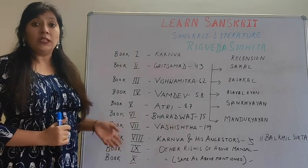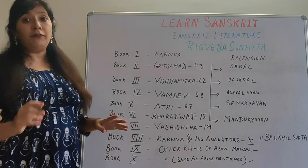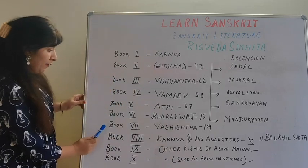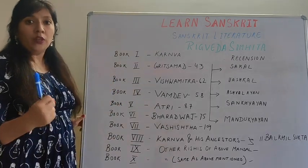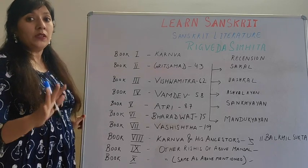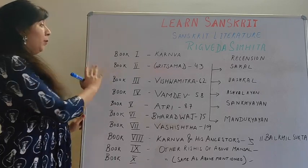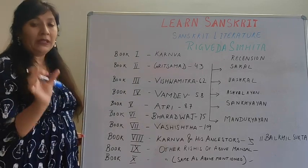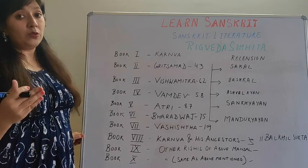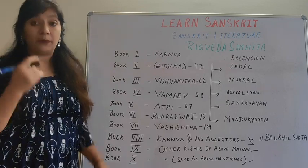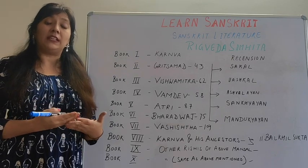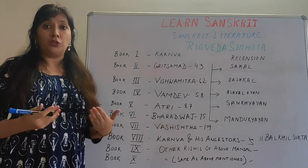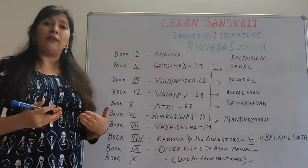Rig Veda is divided into ten books or mandalas, and every book or mandala from second to seventh has a rishi or sage who has written the particular book, or whose ancestors have also contributed in writing those mandalas or books. Rig Veda Samhita has all the mantras or verses to worship God or to make sacrifices.